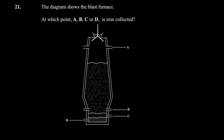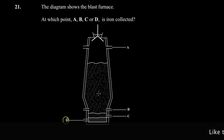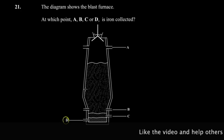Let's continue from question 21. The diagram shows a blast furnace. At which point — A, B, C, or D — is iron collected? The answer is D, because iron has the highest density of all the materials produced here through the various reactions.